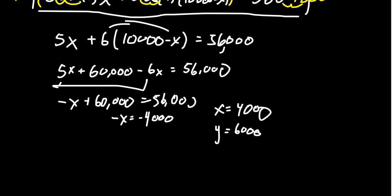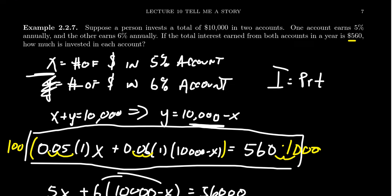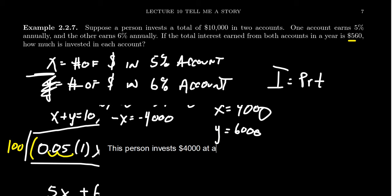And so we can conclude here that this person invested $4,000 at a rate of 5% and invested $6,000 at a rate of 6%.